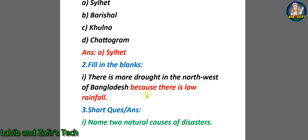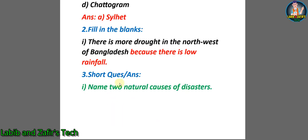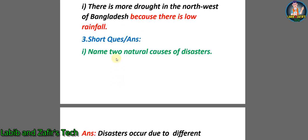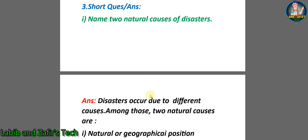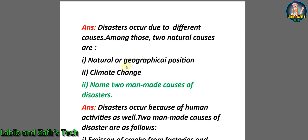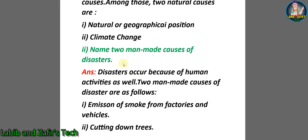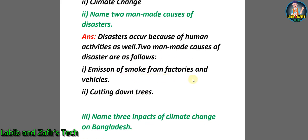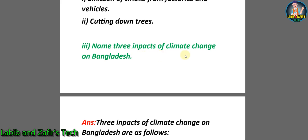Now the filling in the blank: There is more drought in the northwest of Bangladesh because there is low rainfall. Now let's go through some short question answers. Question one: Name two natural causes of disasters. Answer: Disasters occur due to different causes; two natural causes are: number one, natural or geographical location; number two, climate change. Question two: Name two man-made causes of disasters. Answer: Two man-made causes are: number one, emission of smoke from factories and vehicles; number two, cutting down trees.